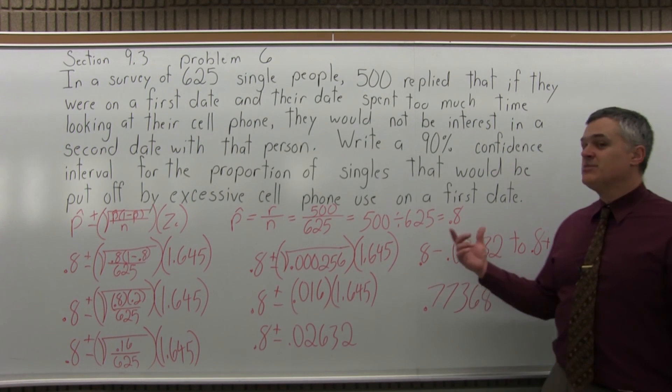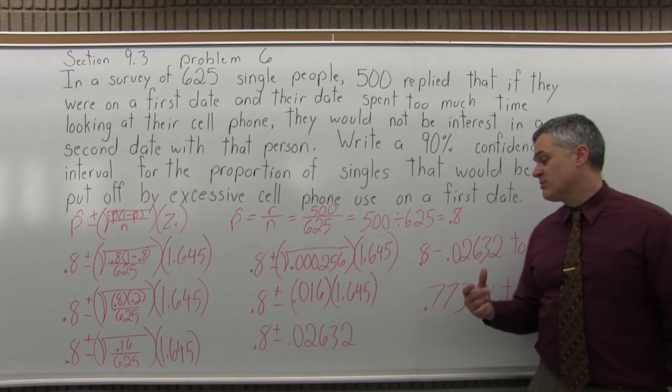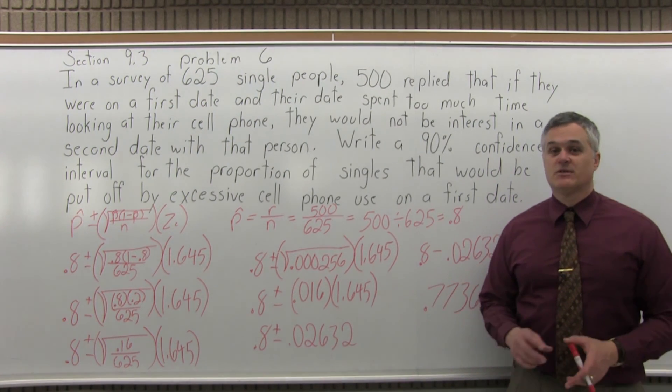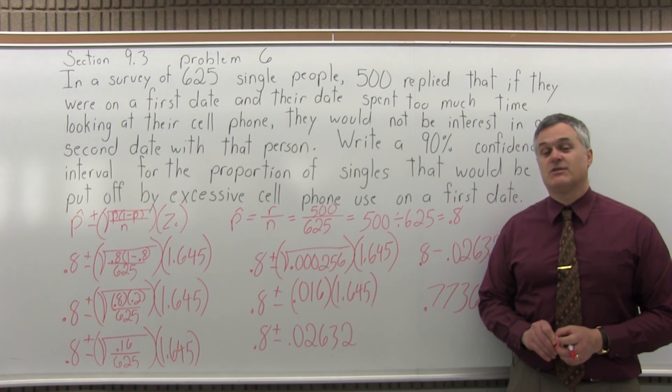So this is an interval that I'm 90% sure that the true population proportion lies in if I examined all the single people and asked them how they felt about cell phone use on a first date.